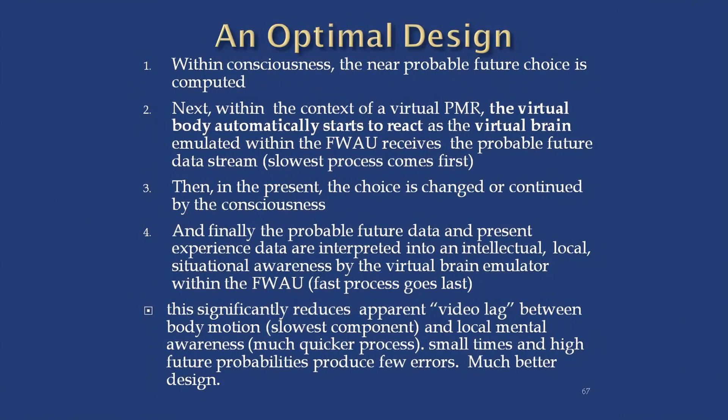Here will be an optimal design. We're going to start in this process of cognition with the future probable reality database, because that's where we always start — that's what's likely to happen. We'll look at that future probability, and right away, before we even make a decision on what we're going to do next, before we get to the present in our free will, we're going to start that body moving. We're going to get that body underway, because we're only dealing with 10 to the minus 44 seconds — it's a tiny little bit. So we give that body a little head start based on what we probably think will happen.